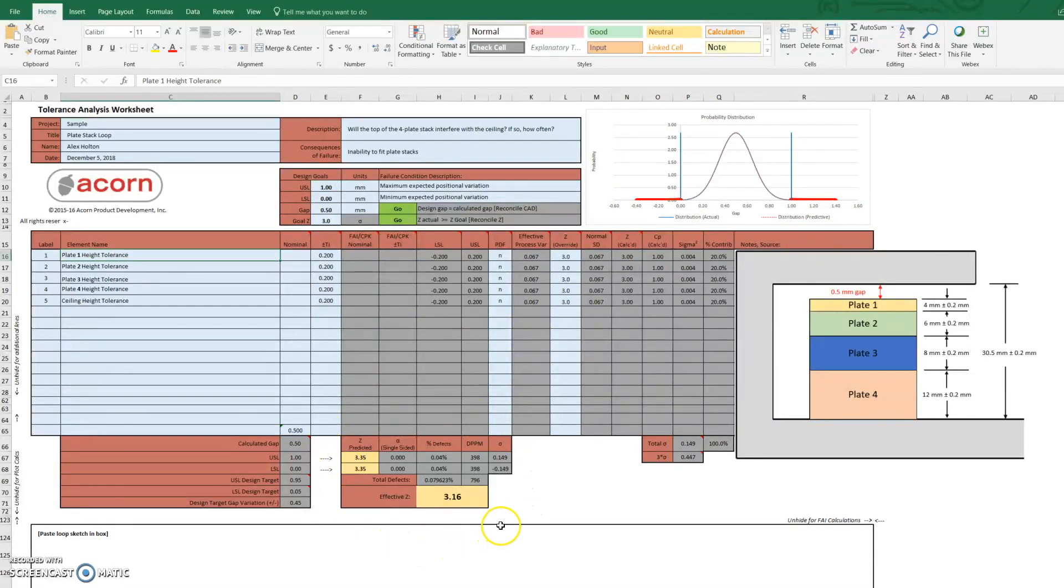So for our loop, we can conclude that if we recreated this assembly a million times, we'd expect an interference only 800 times out of that million, which equates to a 0.08% value, which is very good.